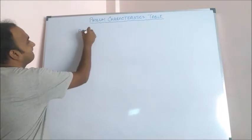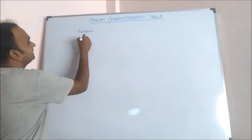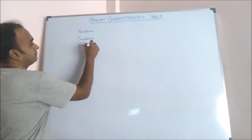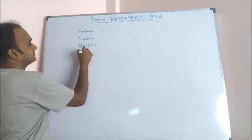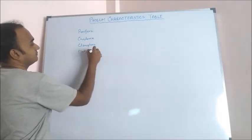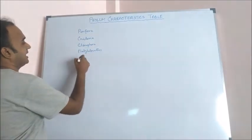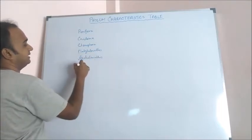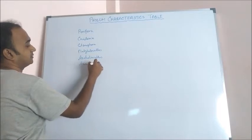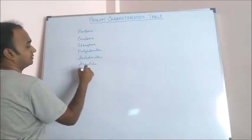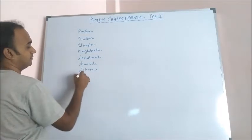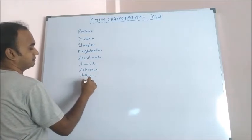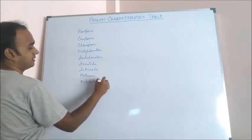Phyla: Porifera, Cnidaria, Ctenophora, Platyhelminthes, Aschelminthes, Annelida, Arthropoda, Mollusca, Echinodermata, and Chordata.